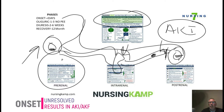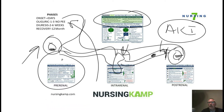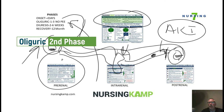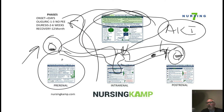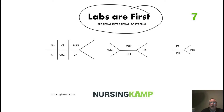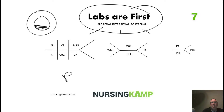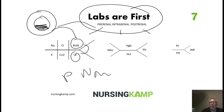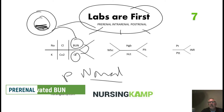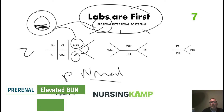If the onset isn't addressed, the patient moves into the oliguric phase, when there is decreased or no urine output. The kidney is essentially protecting itself. In pre-renal failure, the problem is generally volume-related, and we'll see an elevation of BUN with normal creatinine — a ratio called 20 over 1, which indicates pre-renal failure.